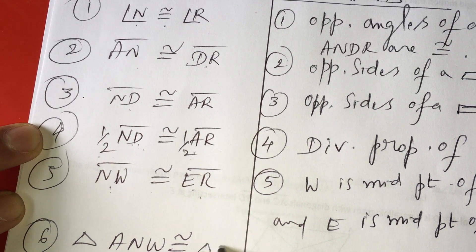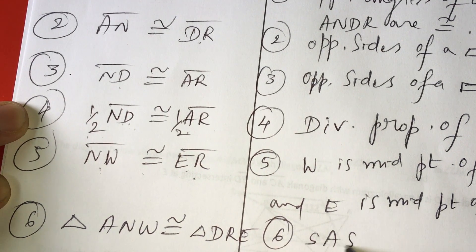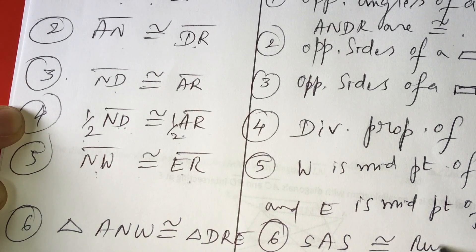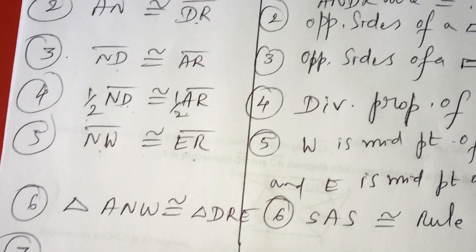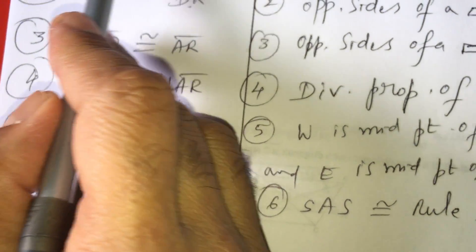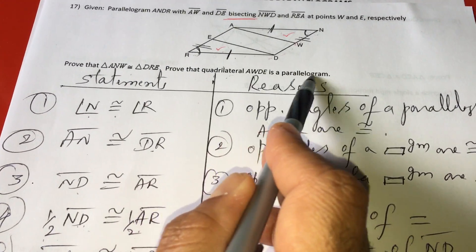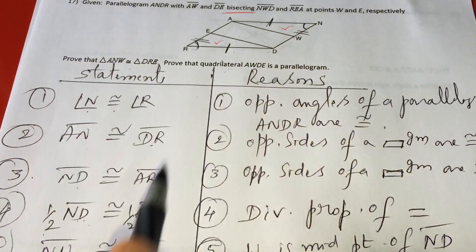Triangle DRE. Why? The reason is side-angle-side congruency rule. Next, seventh one. See, our aim: I have proved this part, ANW and DRE, they are congruent. I have to show AWDE is a parallelogram.